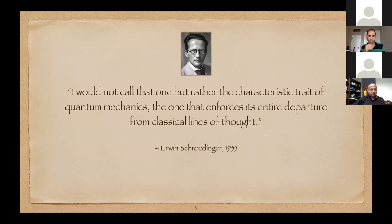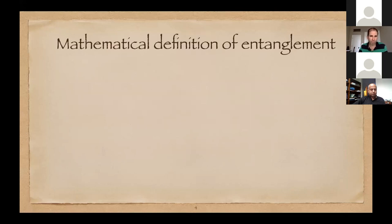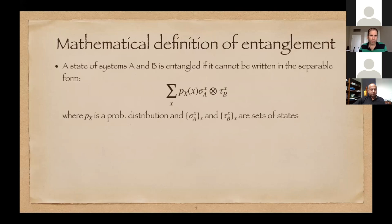This is a famous quote — maybe some of you have seen it already, but if you haven't, it's very interesting to read: 'I would not call that one, but rather the characteristic trait of quantum mechanics, the one that enforces its entire departure from classical lines of thought.' So the mathematical definition of entanglement is this.